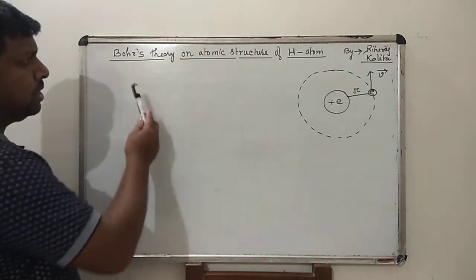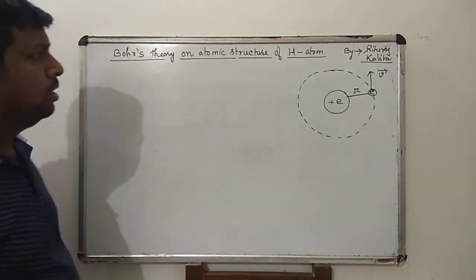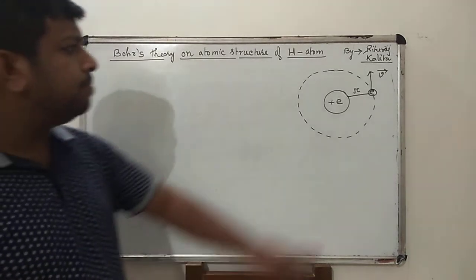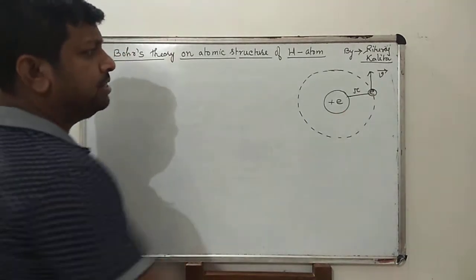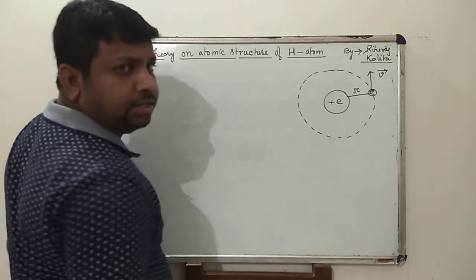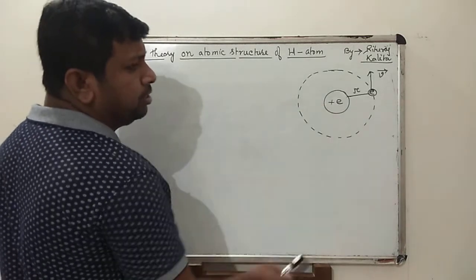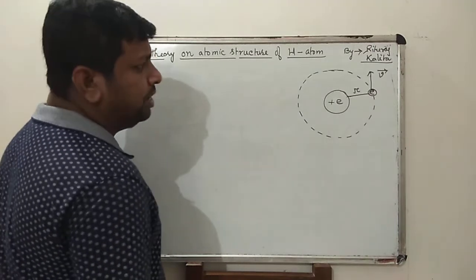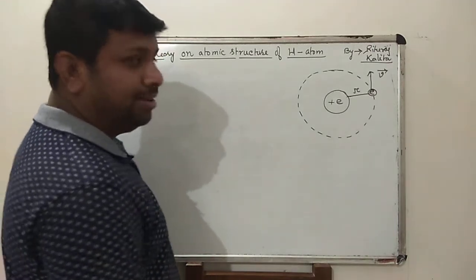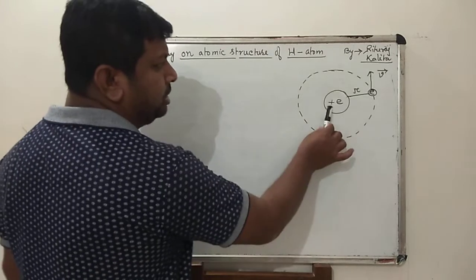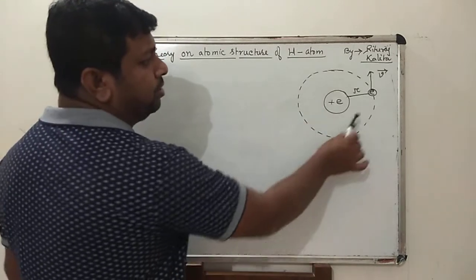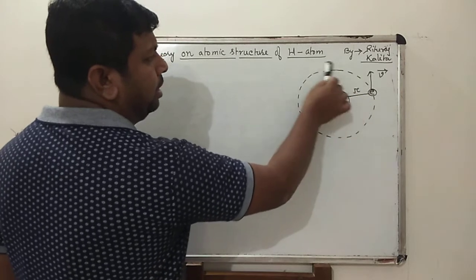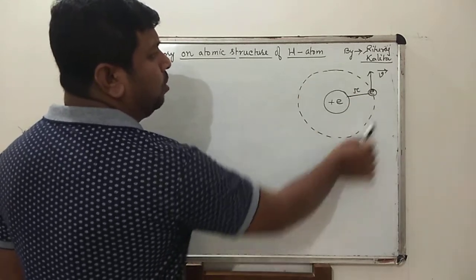Now we discuss Bohr's theory on atomic structure of hydrogen atom. Here, this is an electron and this is the nucleus. In hydrogen atom, the atomic number of hydrogen is 1, so it has 1 proton inside the nucleus. The electron is revolving around the nucleus in that orbit.